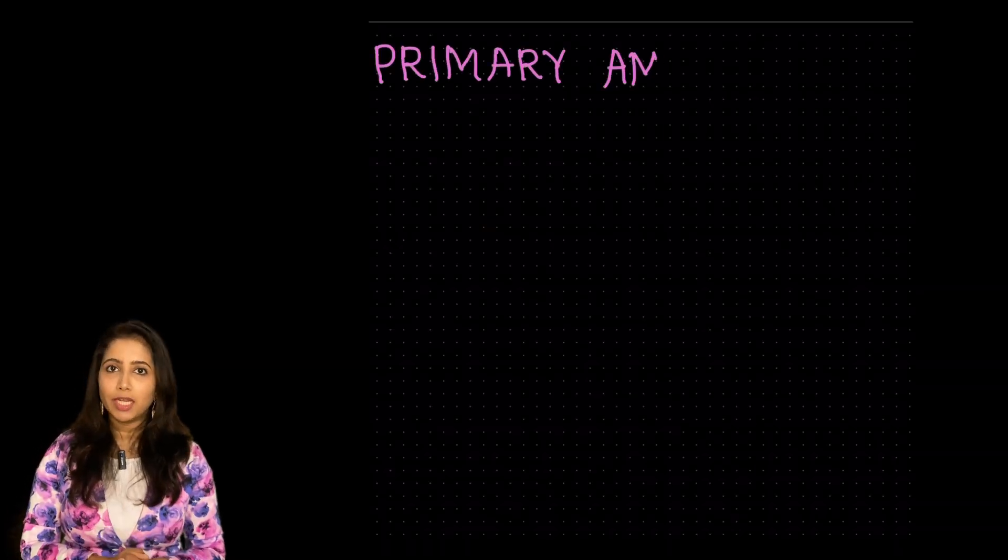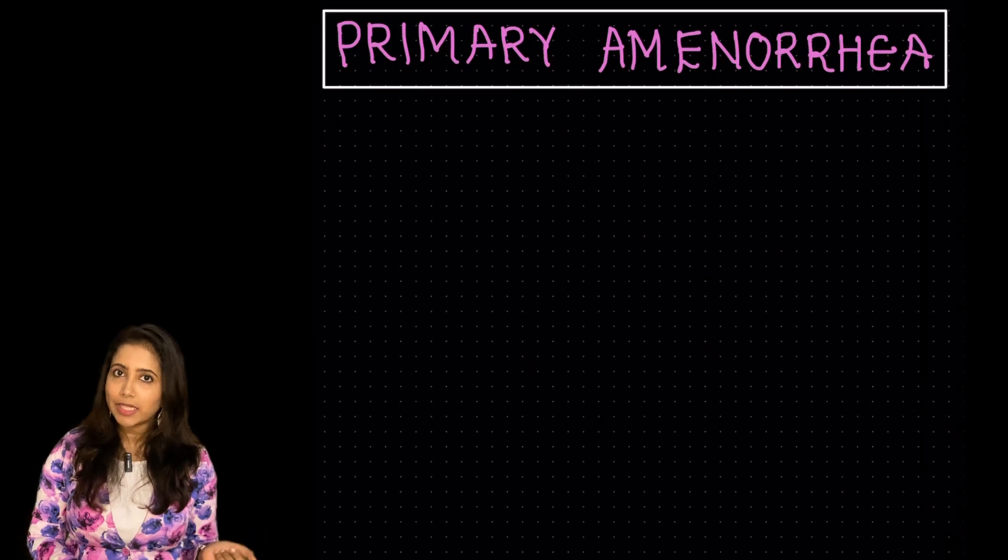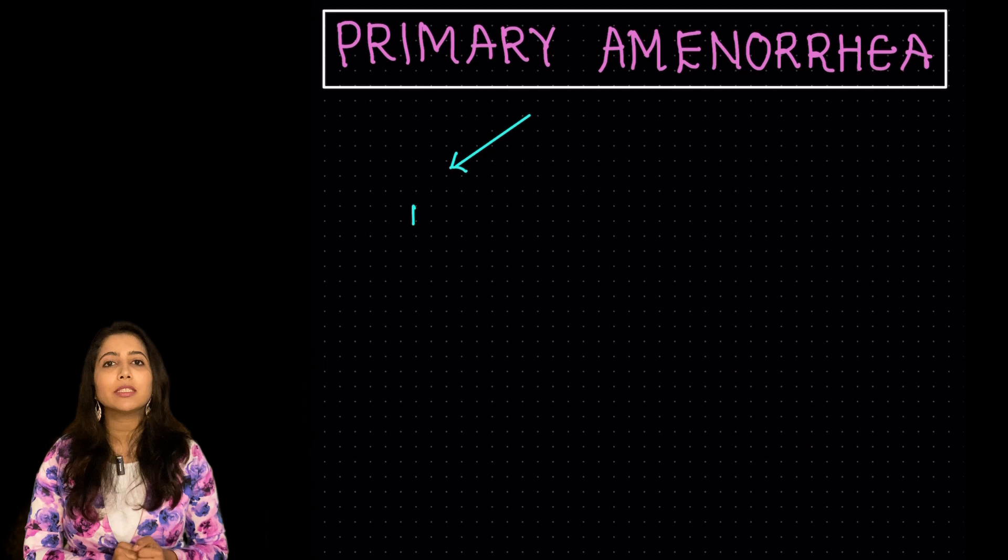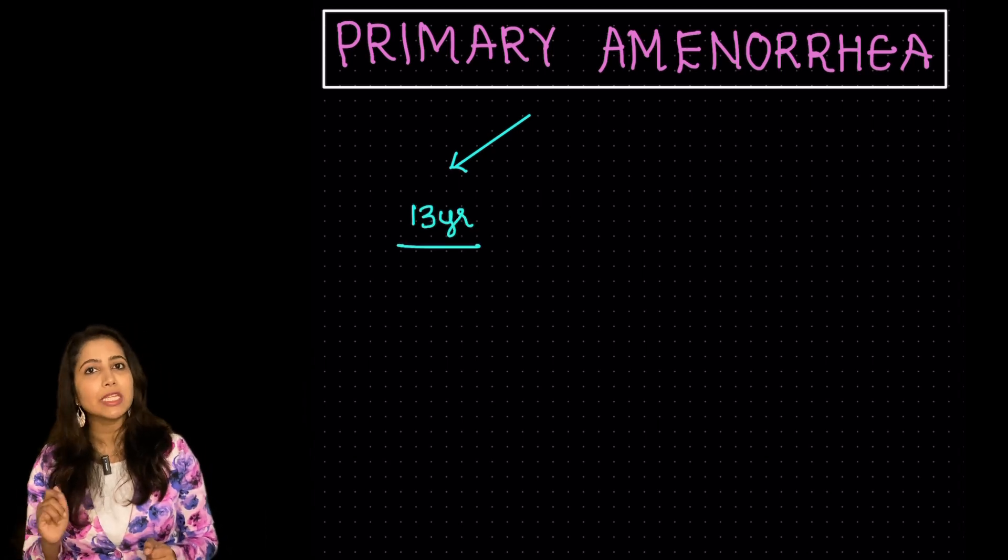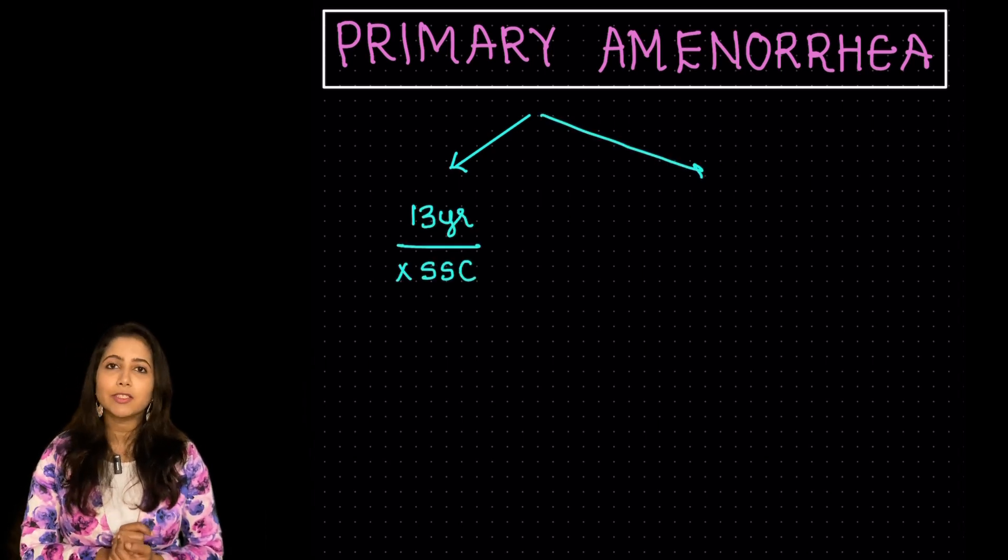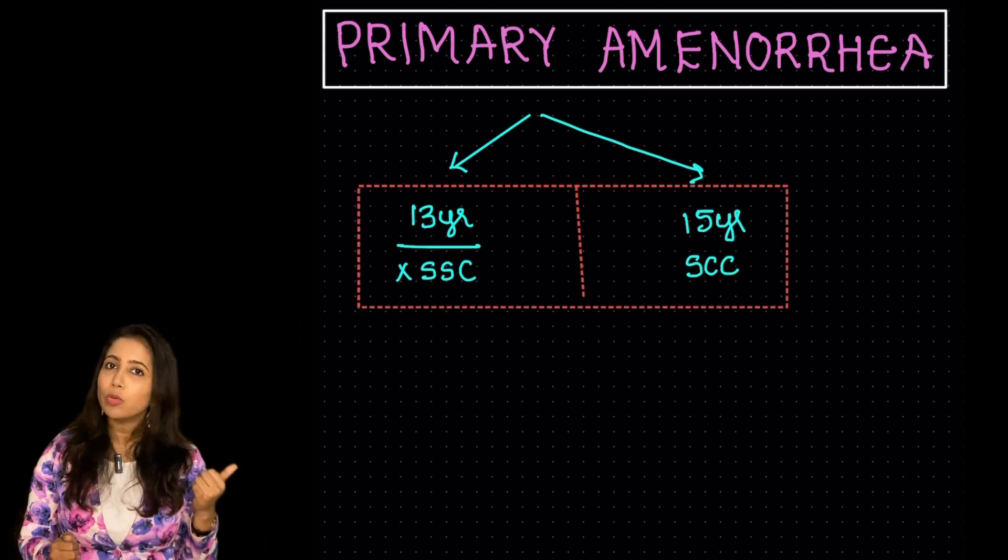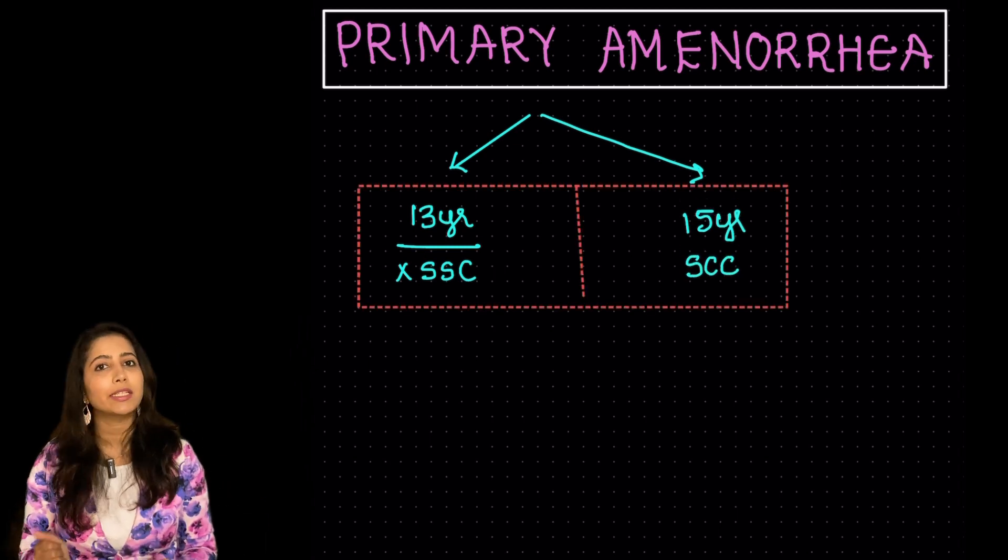So primary amenorrhea is defined as absence of menses by the age of 13 years if there is no secondary sexual characters or by the age of 15 years if there is presence of secondary sexual characters. 13, 15 without secondary sexual characters with secondary sexual characters.